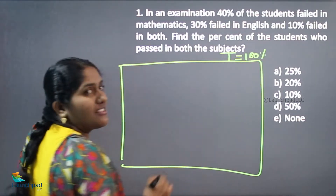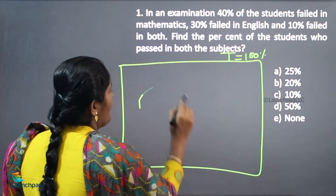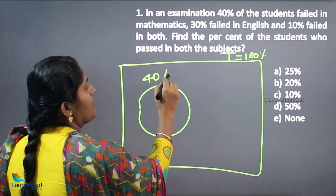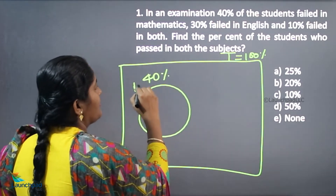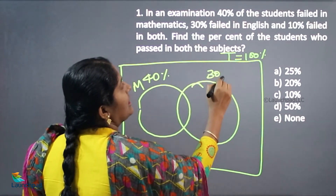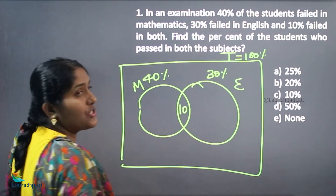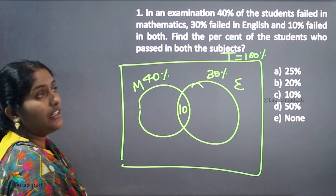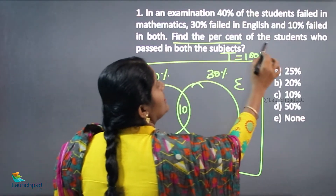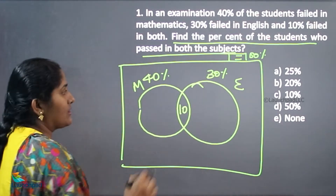The percentage concept is included in the Venn diagram concept. 40 percentage of students failed in maths and 30 percentage failed in English. 10 percentage failed in both the subjects. Find the percentage of students who passed in both the subjects.